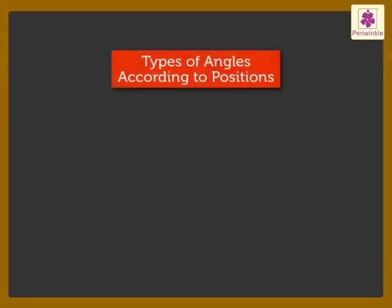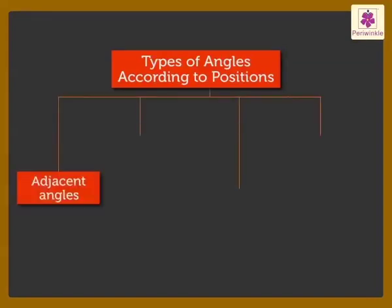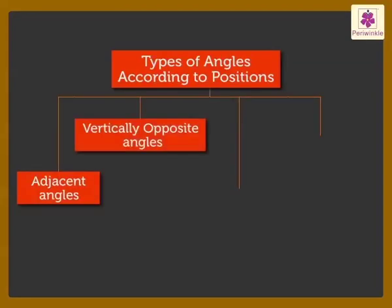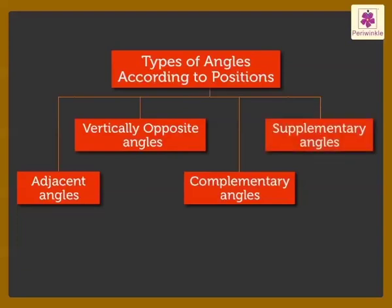There are four types of angles under this category. They are Adjacent Angles, Vertically Opposite Angles, Complementary Angles, and Supplementary Angles. Let us learn more on each of them.